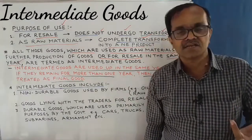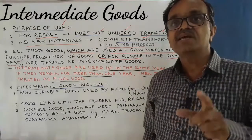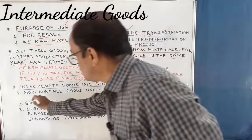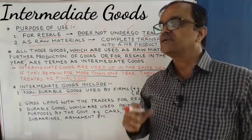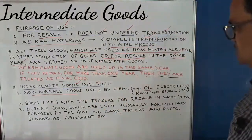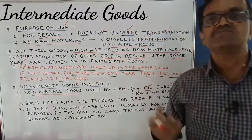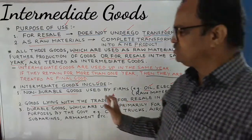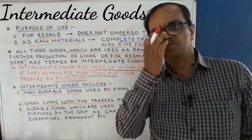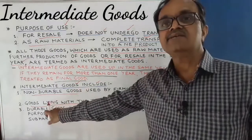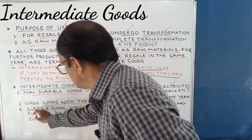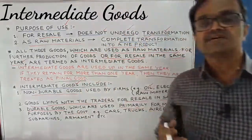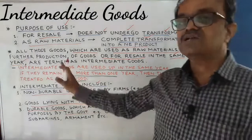What does intermediate goods include? Number one: non-durable goods — those goods which cannot be used for a longer period of time, i.e., single-use goods. For example, oil, electricity, or raw materials used by producers. Second: goods lying with traders for resale in the same year — whatever goods a trader or merchant has for selling in that same year are intermediate goods; if not sold that year, they become final goods. Third: durable goods used primarily for military purposes by the government — such as cars, trucks, aircrafts, submarines, armaments — are also called intermediate goods, even though they are finished goods.